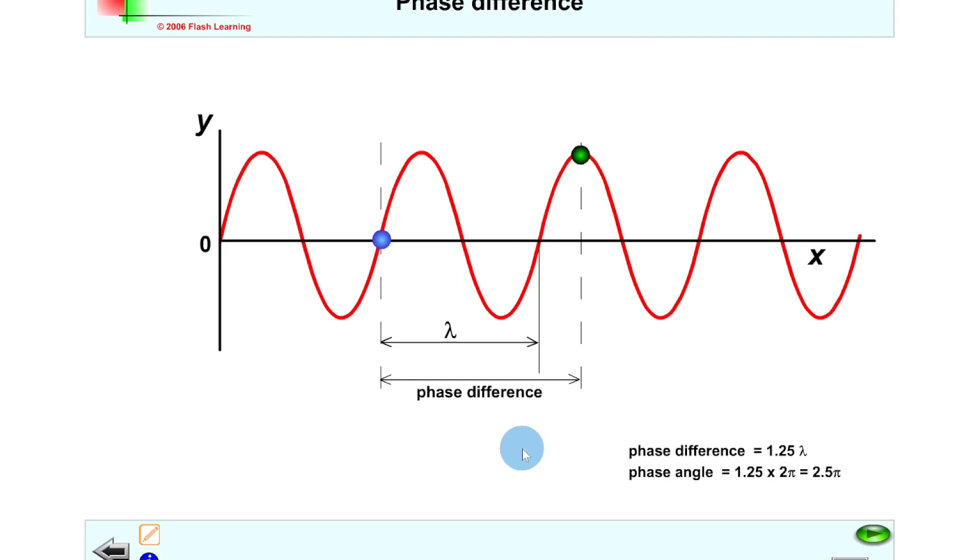Or if you were to think about it in degrees that's 360 degrees for the one full wavelength plus the 90 degrees for the quarter wavelength, so we would get 450 degrees. But we write phase difference with radians not degrees.